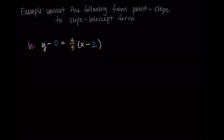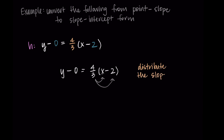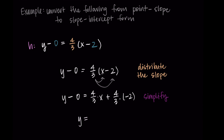Let's do this one last time with function h. Here we have y minus 0 equals four-thirds times x minus 2. Our first step is to distribute the slope, so four-thirds gets multiplied by x and negative 2. This gives y minus 0 equals four-thirds times x plus four-thirds times negative 2. We already have y isolated since minus 0 doesn't affect the function. Simplifying, four-thirds times negative 2 gives negative eight-thirds. So my final answer is y equals four-thirds x minus eight-thirds, and that's how we convert to slope-intercept form.